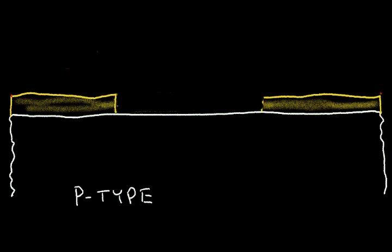Now I'm going to grow a very thin layer of glass over the surface — a very thin layer in the region above the silicon, and over the entire surface. Then I want to deposit a layer of polysilicon over the surface of this wafer.